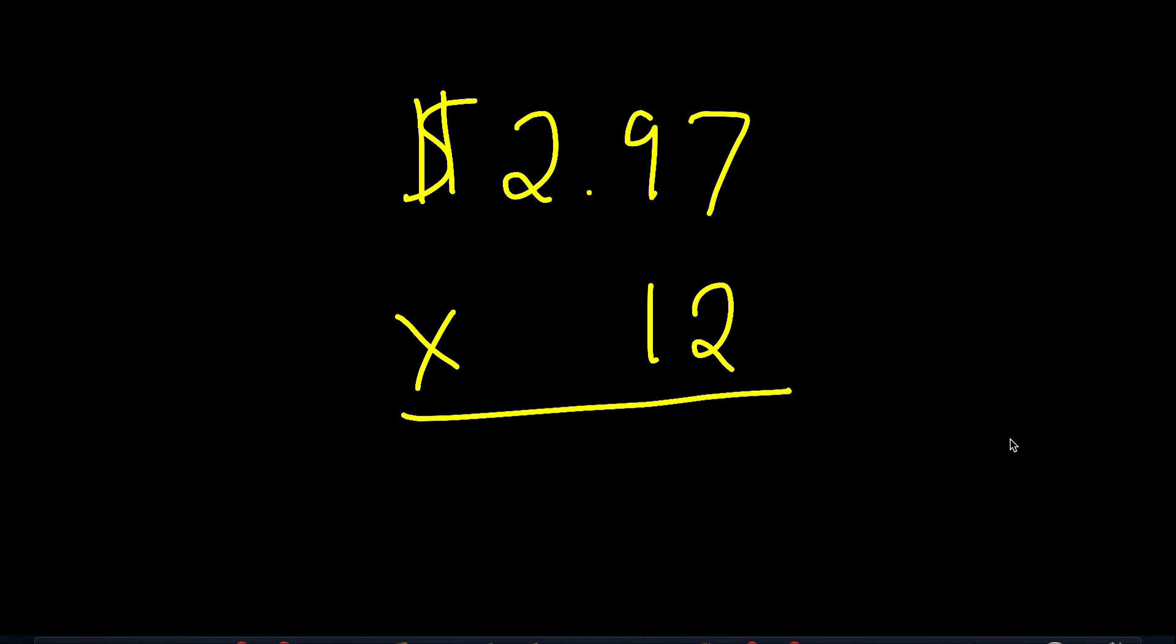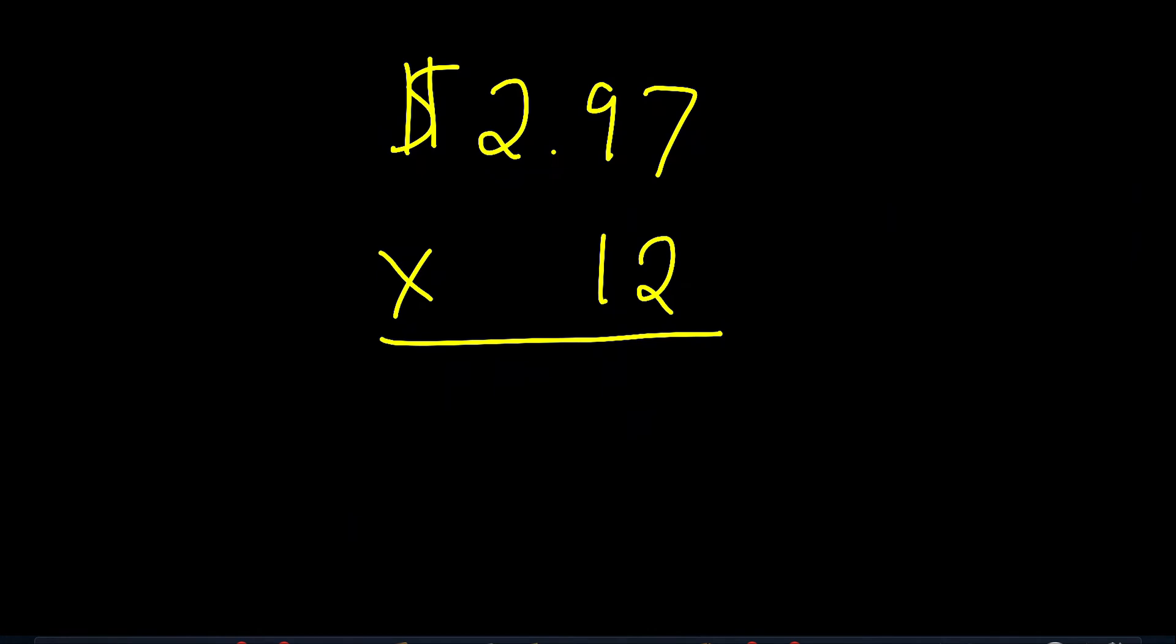Okay, so we're going to do the standard algorithm this time. That way we continue that practice. So to start, I'm going to do 7 times 2, which is 14. Carry the 1. 9 times 2 is 18 plus 1 makes 19. Carry the 1. 2 times 2 is 4 plus 1 makes 5. Now it's time to scribble out. Zero out, and then we're going to bring down that zero, right? Now we can multiply diagonally. 1 times 7 is 7. 1 times 9 is 9. 1 times 2 is 2. Now we're ready to do our addition.